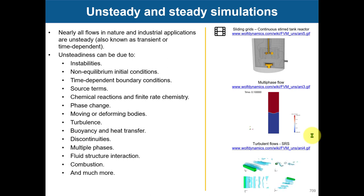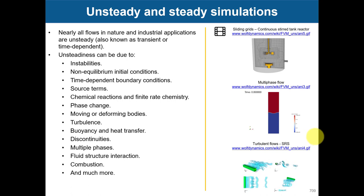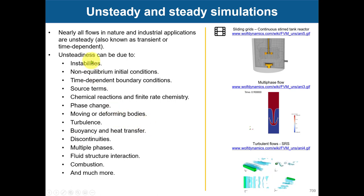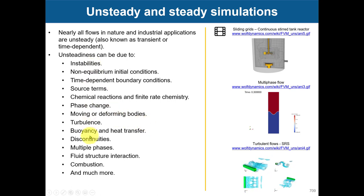Basically, nearly all flows in nature and industrial applications are unsteady — also known as transient or time-dependent. That unsteadiness can be due to many factors; here you have a short list, but usually they are unsteady.